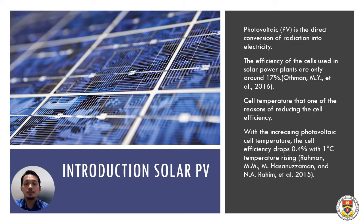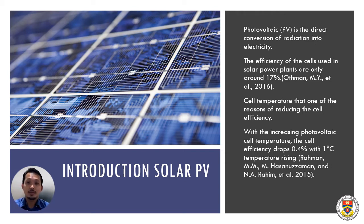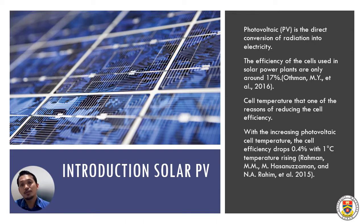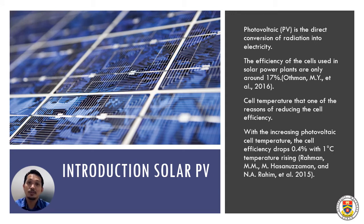Solar PV is basically one of the well-known renewable energy sources available. We get the energy from solar PV from the sun itself, converting it into electrical energy. But the problem with solar energy is the efficiency of the solar PV itself. One of the factors that affect the performance of solar PV is temperature. Since the source of power is the sun, heat is one of the main issues. The efficiency of the cells used in solar power plants is only around 17%, whereas the other energy is basically lost through heat and other losses. Cell temperature is one of the reasons for reducing cell efficiency.